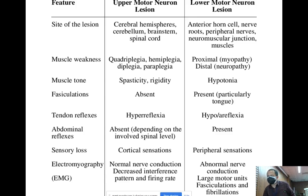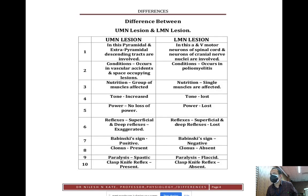Regarding sensory loss: in upper motor neuron lesion you find cortical sensations are lost, and in lower motor neuron lesion there is peripheral sensation loss. Electromyography findings are outside the scope of this discussion, but further differences are also given in other texts.